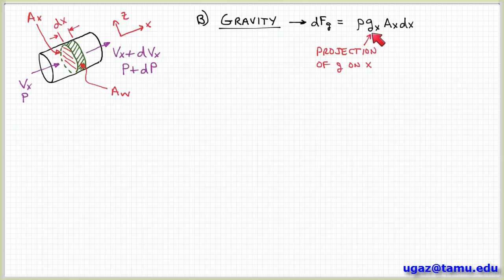So g_x is the x component of the gravitational acceleration vector g. So remember that we're looking at the x component of these forces. And then A_x dx represents the volume. Because remember gravity is a body force so it acts on the volume. So the cross-sectional area times this width is basically the volume of this disk-shaped control volume.